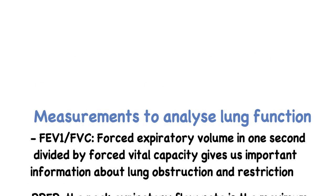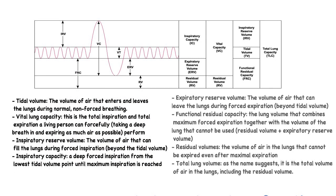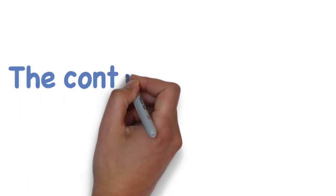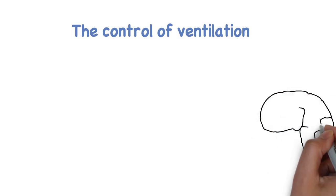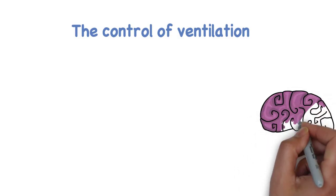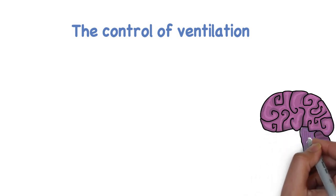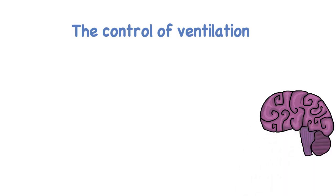There are more methods and measurements to analyze lung function; however, they will not be discussed in this video. Now that we have talked about lung volumes, let's talk about the control of ventilation. Ventilation has to change in order to supply oxygen and remove carbon dioxide at varying rates. In this part of the video, we will discuss factors that influence ventilation and how they do it.